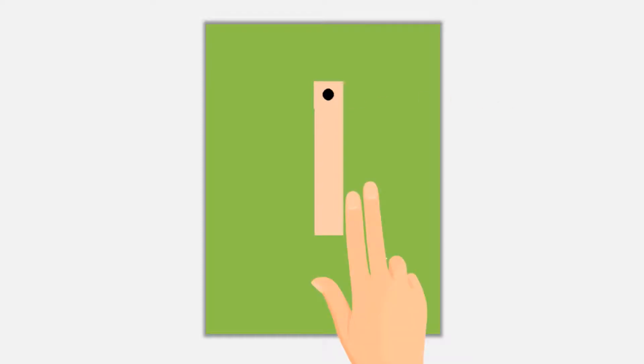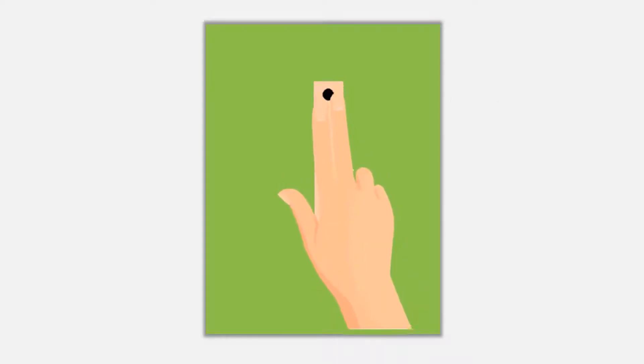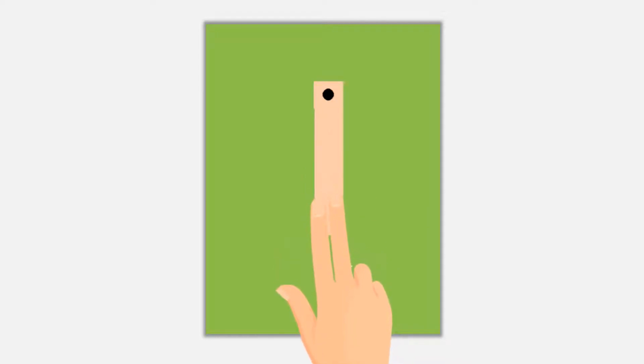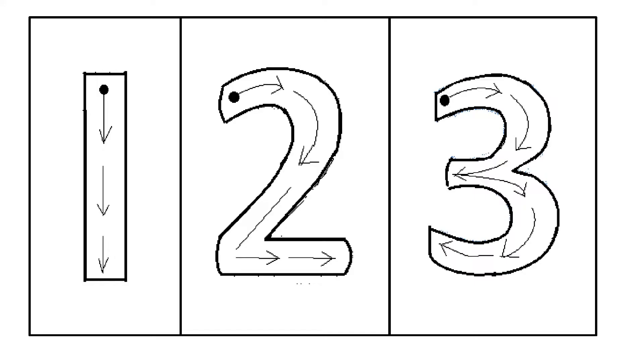This is number one, and I'm going to show you how to trace number one. Watch first. We are going to start from this black dot here. Do you have these numbers with you? Now I'm going to show you how to trace number one, and you are going to watch me first.